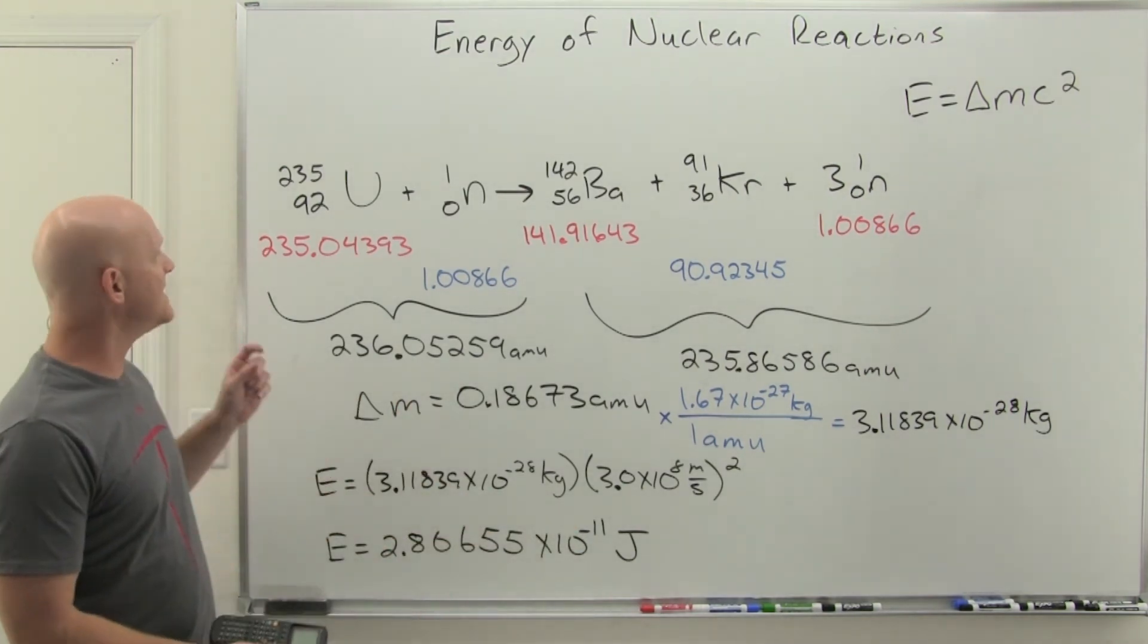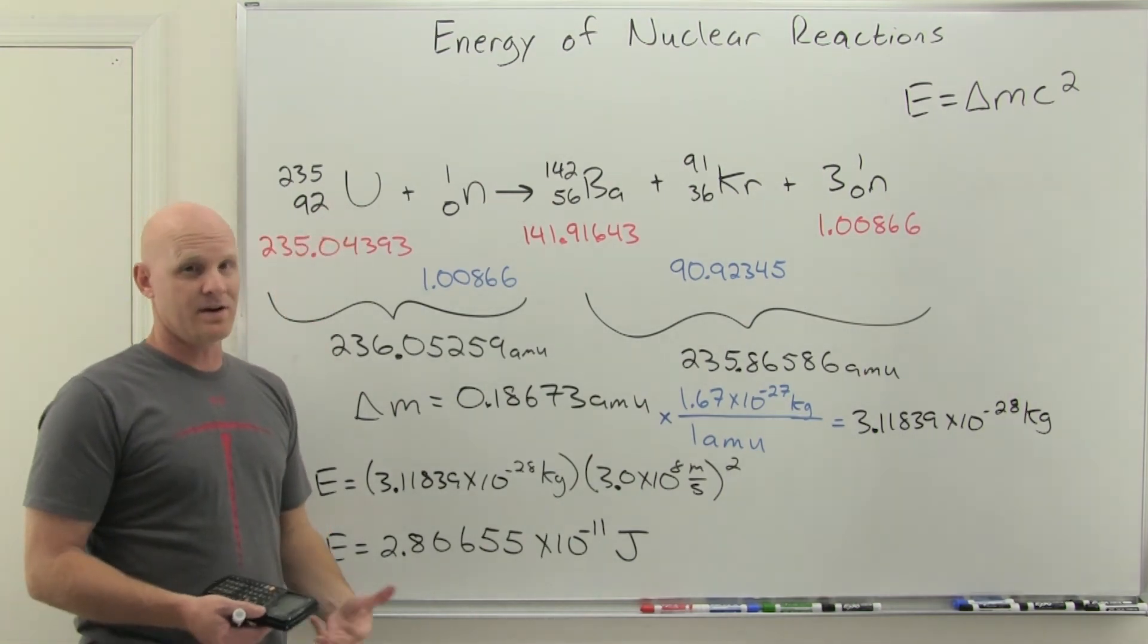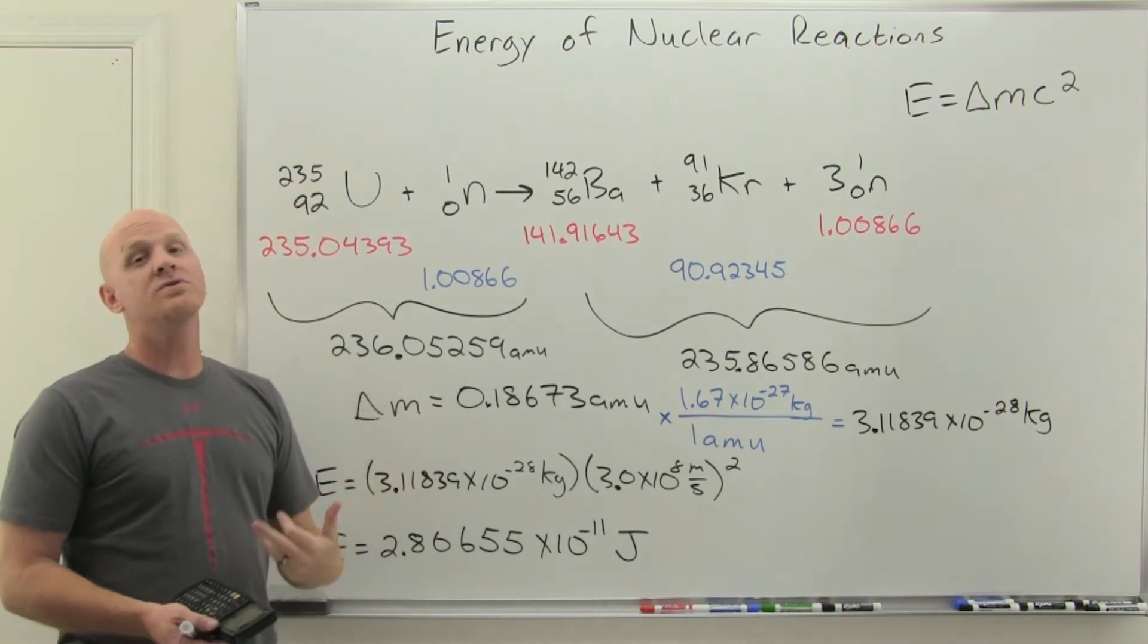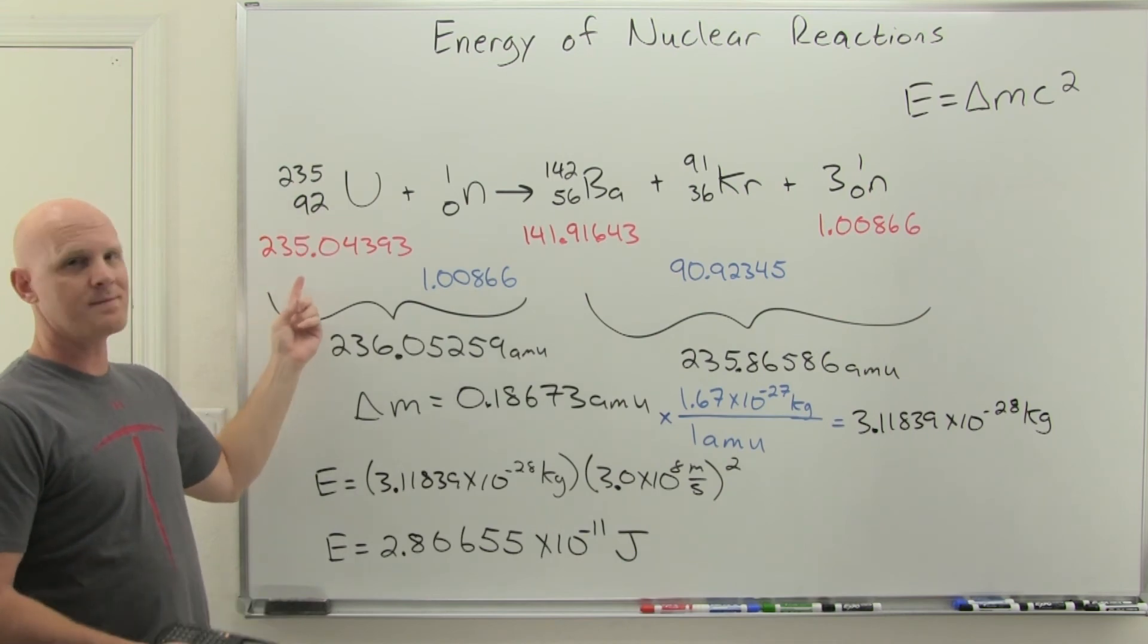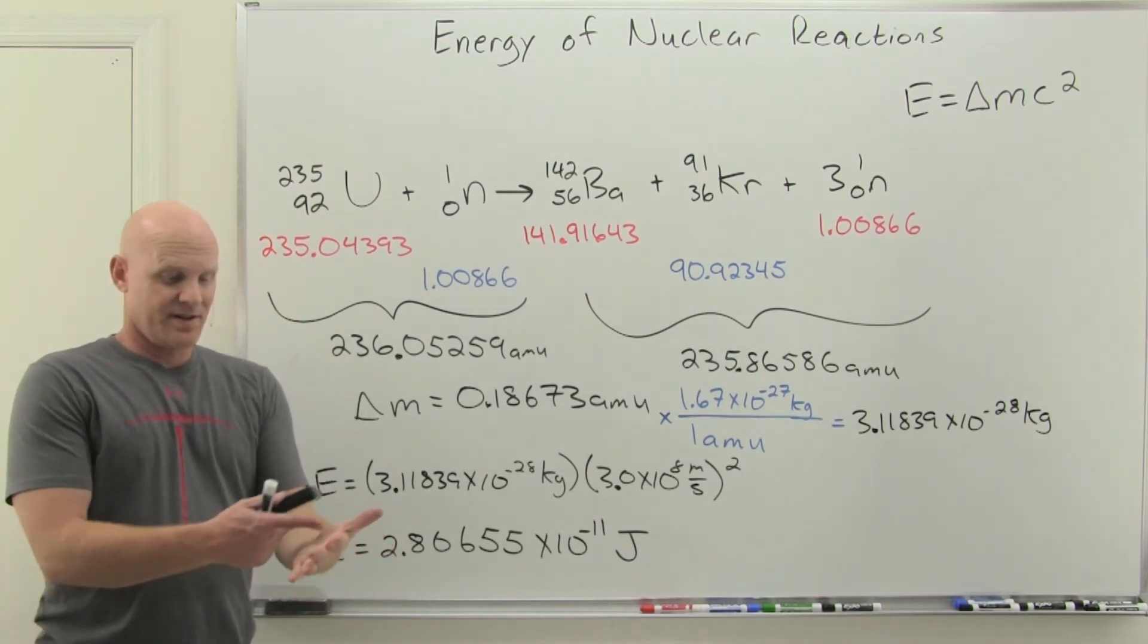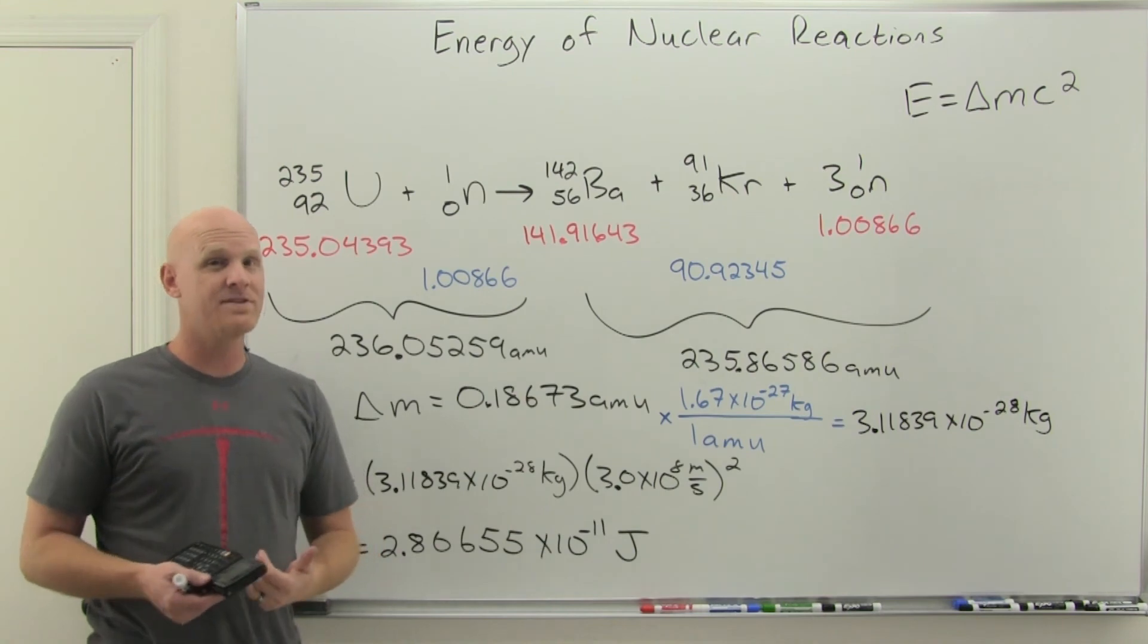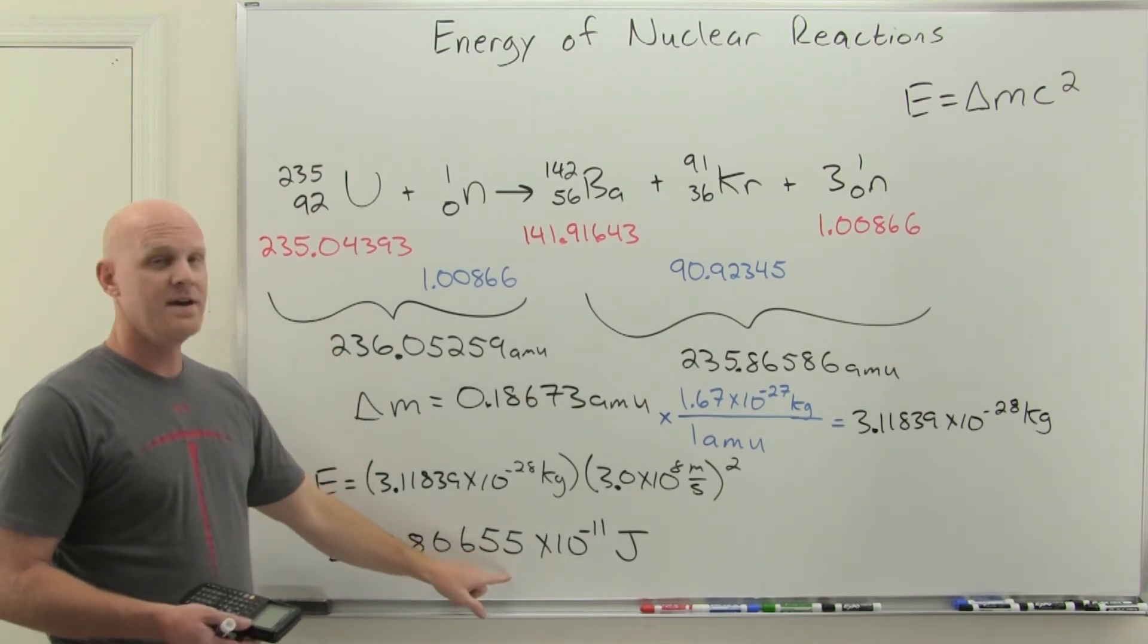But again, this is for just a single uranium atom undergoing nuclear fission. We're not doing this with just one or two atoms. Let's do it with a whole mole of atoms for a second. A whole mole of atoms would weigh 235 grams—just a little bit sitting in the palm of your hand, less than a kilogram of fissionable material.